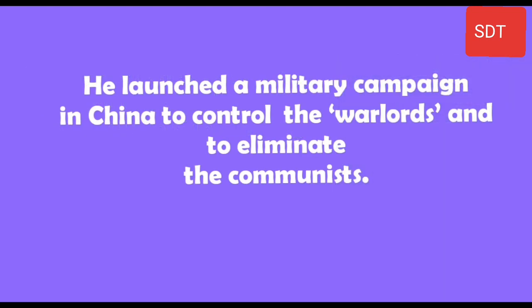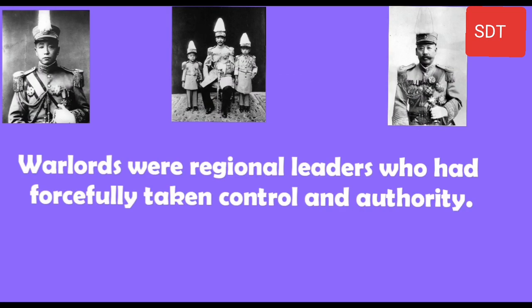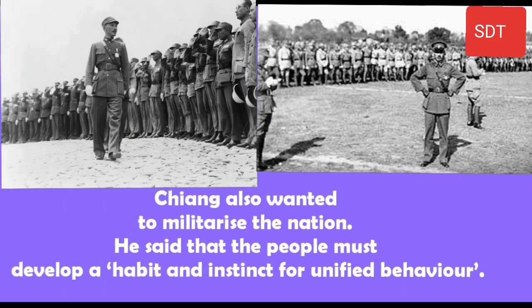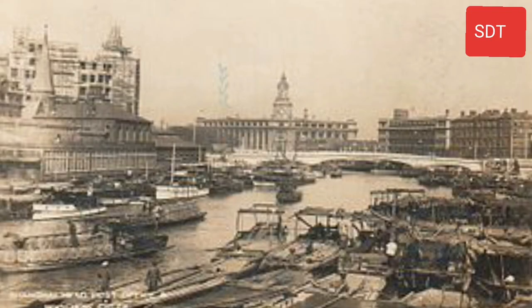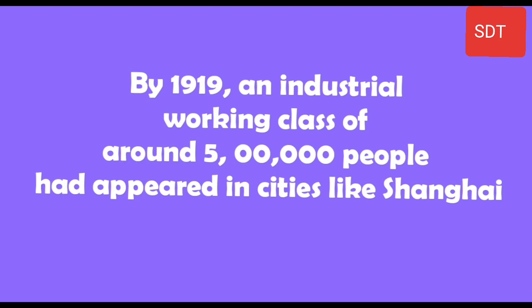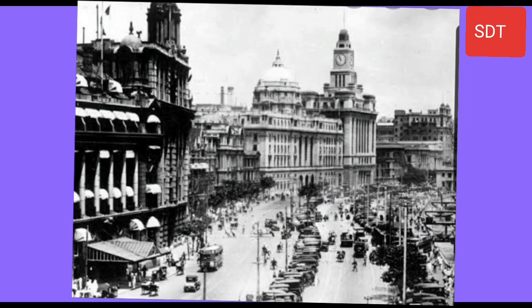Chiang Kai-shek launched a military campaign to control the warlords and eliminate the communists. Warlords were regional leaders who had forcefully taken control and authority. Chiang also wanted to militarize the nation; he said that people must develop a habit and instinct for unified behavior. The Guomindang's social base was in urban areas. By 1919, an industrial working class of around five lakh people had appeared in cities like Shanghai, which later became centers of modern growth.